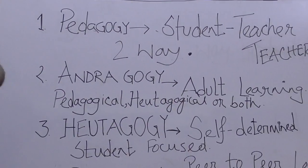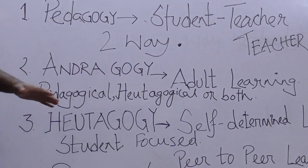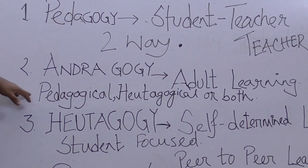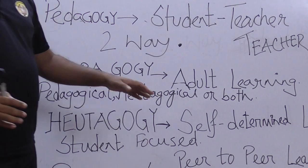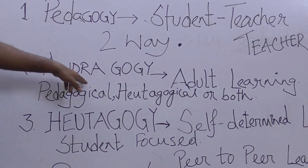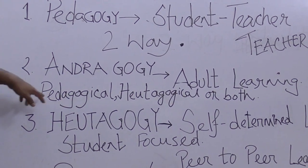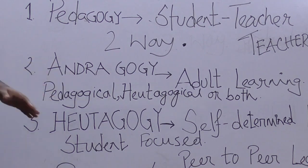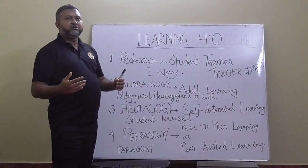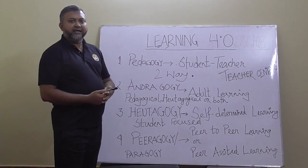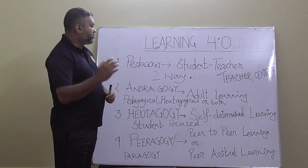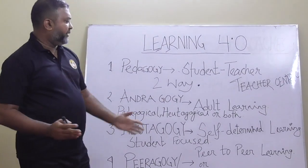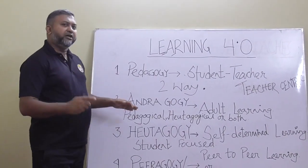The next approach is called andragogy. 'Andra' means adult, 'gogy' means leading — that means this is called adult learning. Andragogy can be a combination of pedagogy or heutagogy, or a combination of both. In the case of adult learning, it is always student-centric — the students fix the pace of the learning and they fix what the subject is. The teacher actually guides the students in this learning process; the teacher is not the main person — the main person is the student. This is called andragogy, used to teach adults.